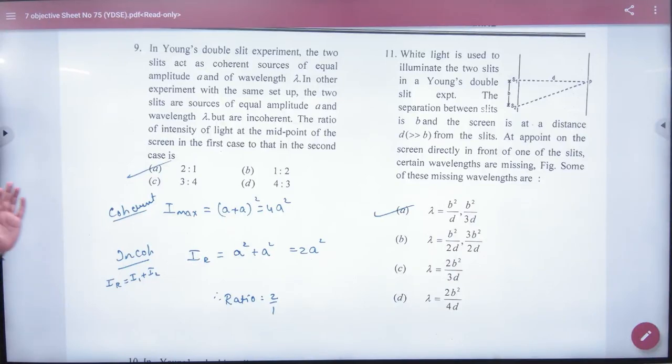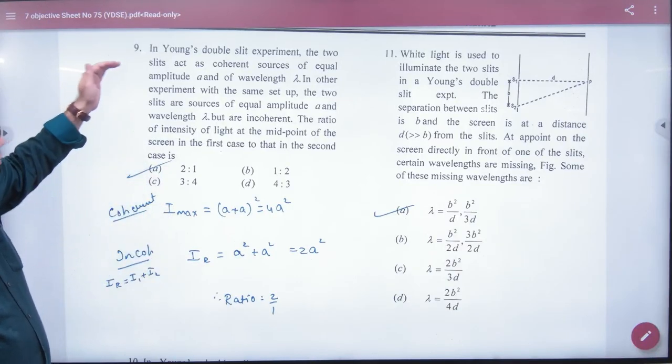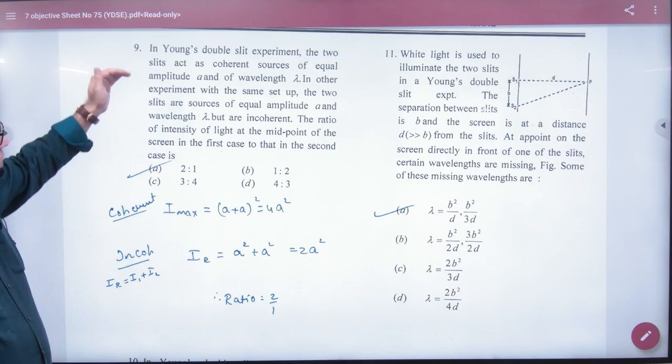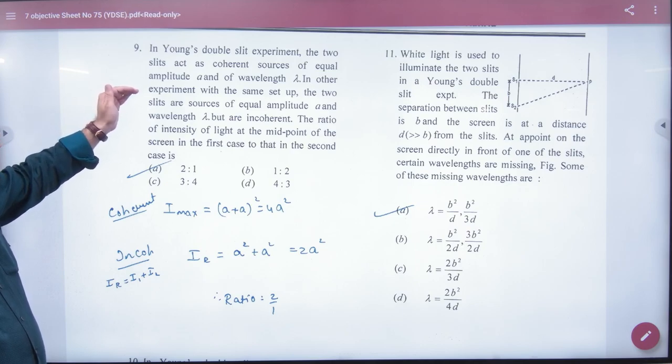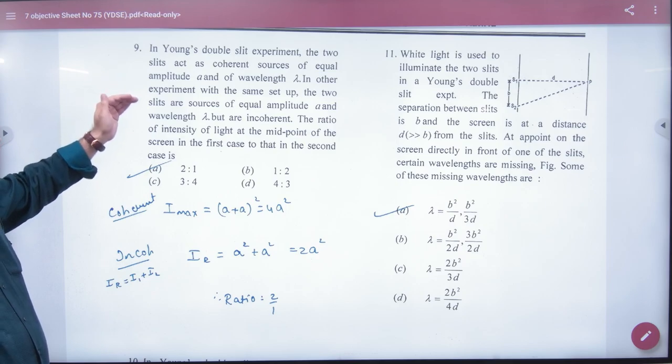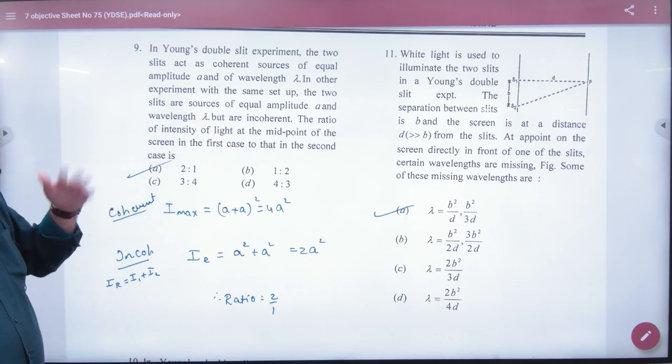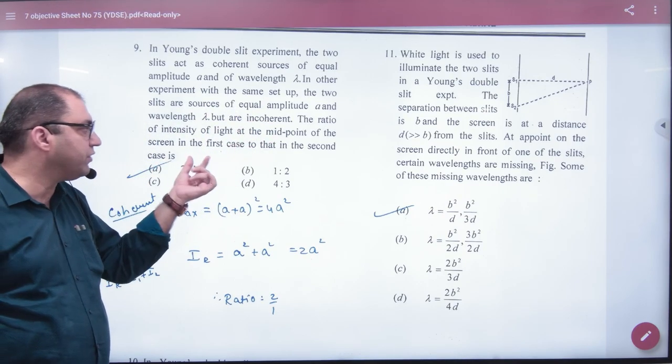In the ninth objective, in Young's experiment, two slits act as a coherent source of equal amplitude A and wavelength lambda. In another experiment, two slits are a source of equal amplitude A, wavelength lambda but incoherent. You have to find the ratio of intensity at the midpoint of the screen.